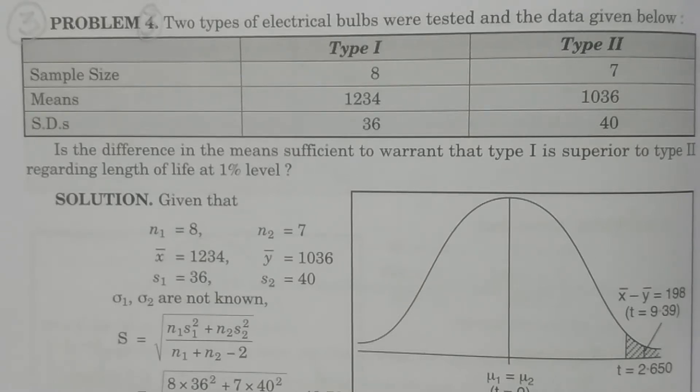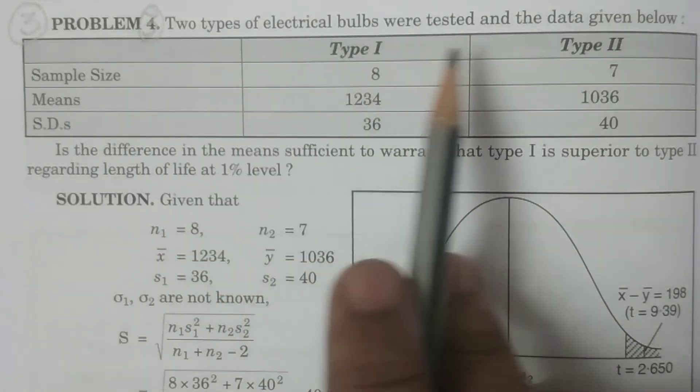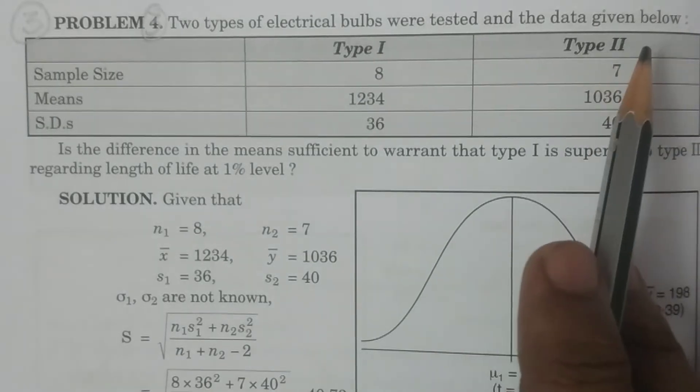In test for two means, small sample case, that is t-test for two means, a small sample case. You see here the problem: two types of electrical bulbs were tested and the data is given below.